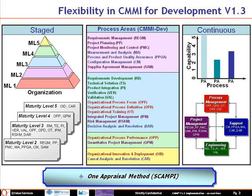There are 22 process areas in CMMI for Development. The process areas appear in the middle box of the slide and are organized into two representations: the staged representation and the continuous representation. The staged representation on the left-hand side shows the process areas clustered in maturity levels 2, 3, 4, and 5.